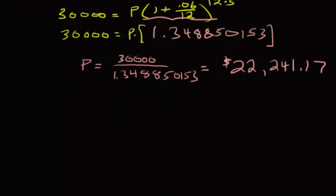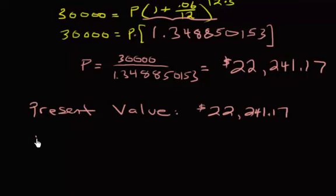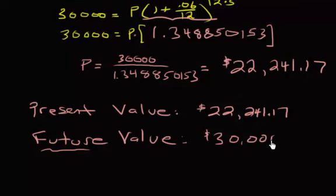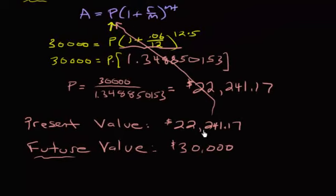So let's scroll down here. What we know is that I have a present value, the amount of money I need to invest today, and that's going to be $22,241.17. And my future value is going to be how much this is worth in 5 years, hence the name future value, and that's going to be worth $30,000. Now if you use this number and plug it into this formula for P to see if you'll get $30,000, it'll be a little bit off. Again, because of rounding, you're going to be off by probably a dollar or less, probably within a penny. So again, that's the difference between future value and present value.